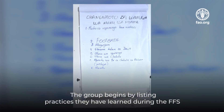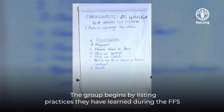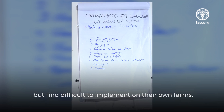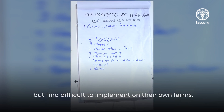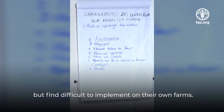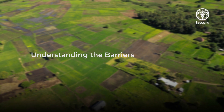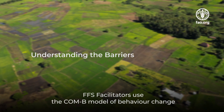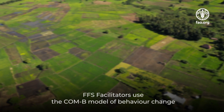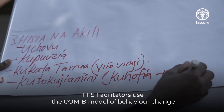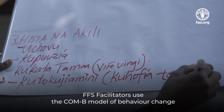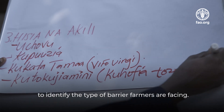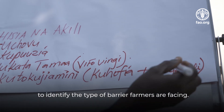Identifying an implementation challenge: the group begins by listing practices they have learned during the FFS but find difficult to implement on their own farms. FFS facilitators use the COM-B model of behavioral change to identify the type of barrier farmers are facing.